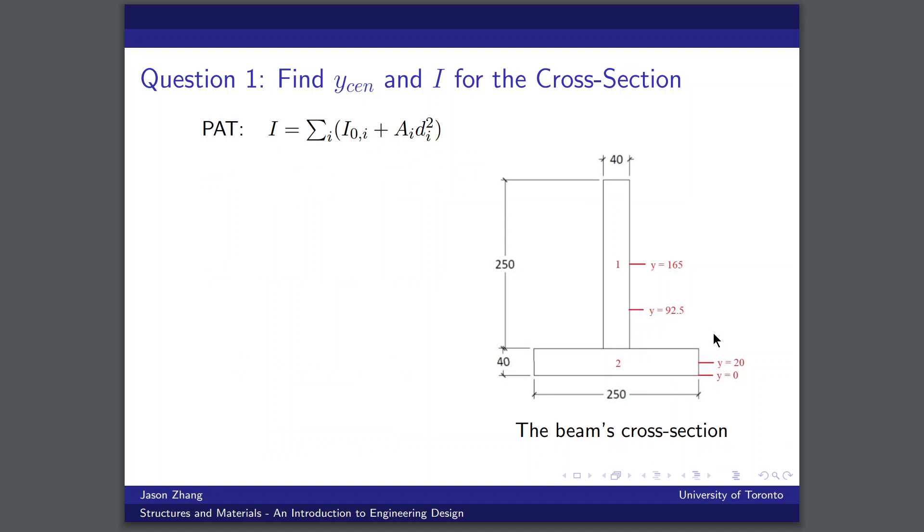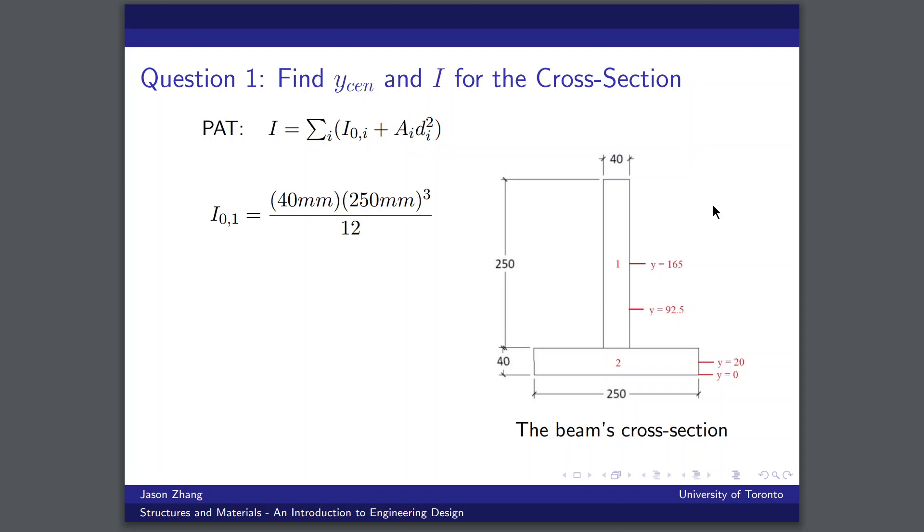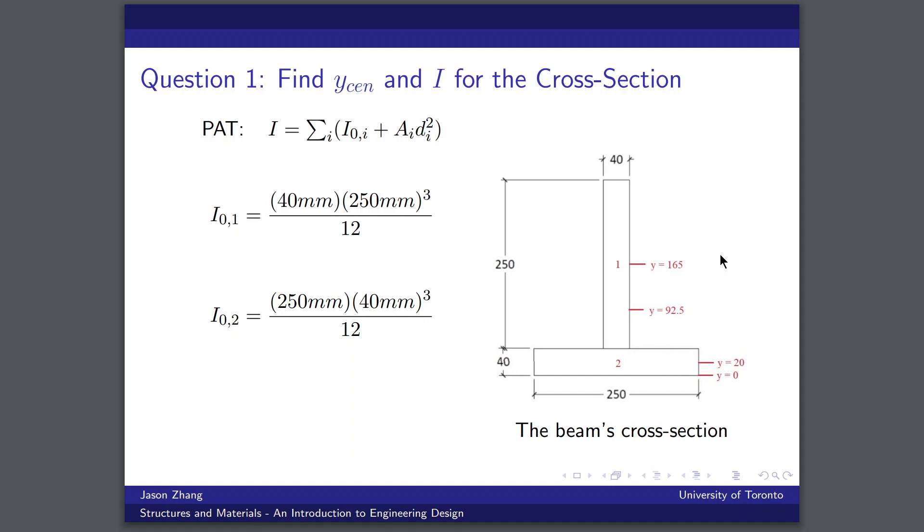Next, we need to use parallel axis theorem in order to find the second moment of area. Essentially, what the parallel axis theorem states is that we can find the second moment of area by summing the local second moments of area for each of our rectangles plus an additional term which is equal to the area of the rectangle multiplied by the distance squared between its local centroidal axis and the global centroidal axis. So we can calculate the local second moment of area of a rectangle by multiplying the base times the height cubed and divide it by 12.